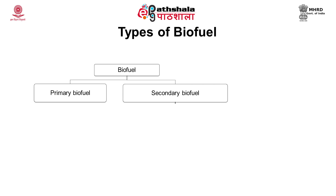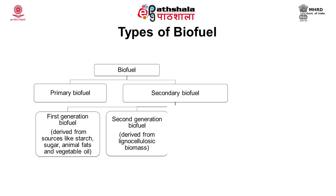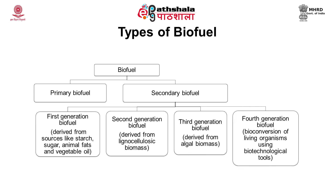Secondary biofuel can be further subdivided into first generation, second generation, third generation, and fourth generation biofuel. First generation biofuel are those that have originated from sources like starch, sugar, animal fat, and vegetable oil. Second generation biofuel use cellulosic biomass-to-liquid technology, including bioethanol and biobutanol from cellulosic biomass. The feedstock for third generation biofuel is algae. Fourth generation biofuel are derived from biotechnological tools.